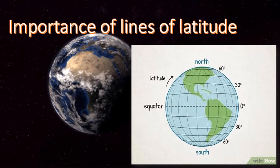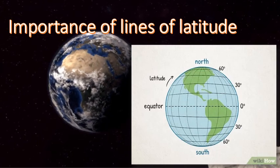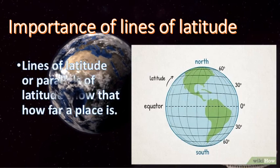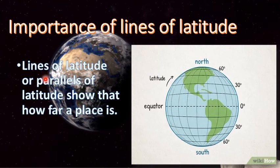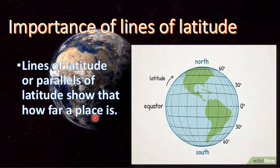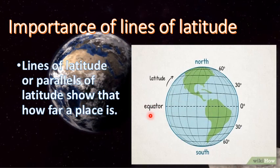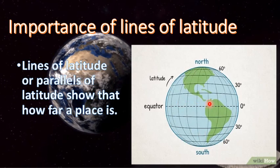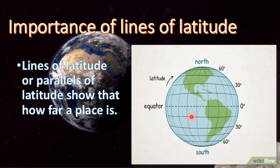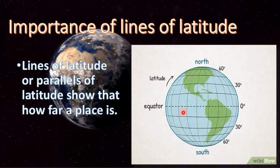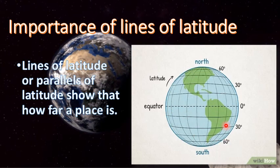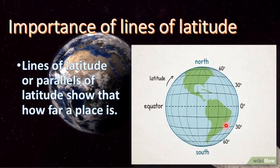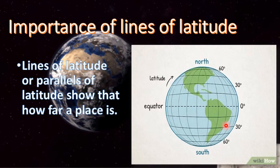Now let's discuss the importance of lines of latitude. Lines of latitude, or parallels of latitude, show how far a place is from the equator. By using the lines of latitude and longitude together, we can easily locate any place on the globe by indicating its direction and position.